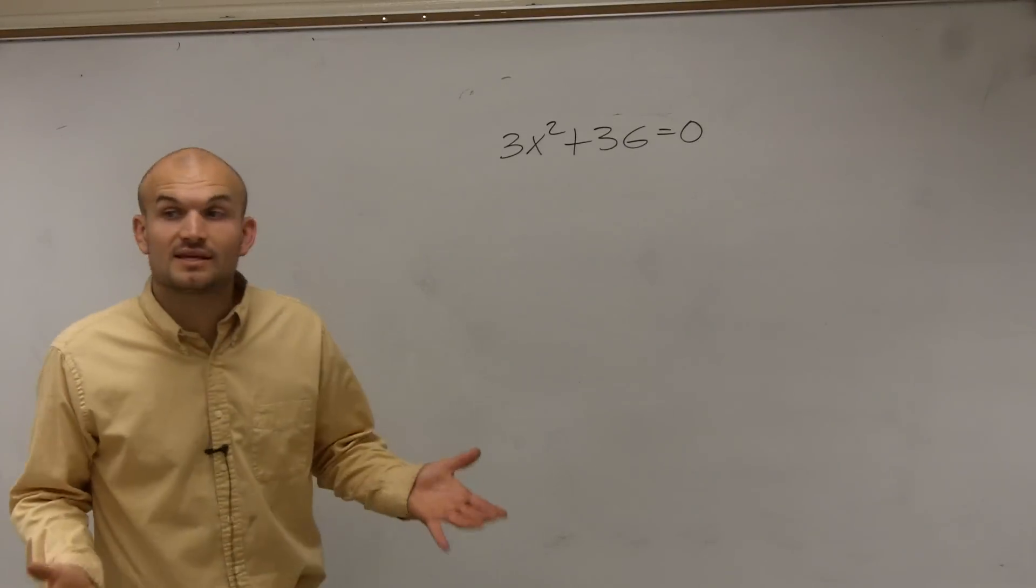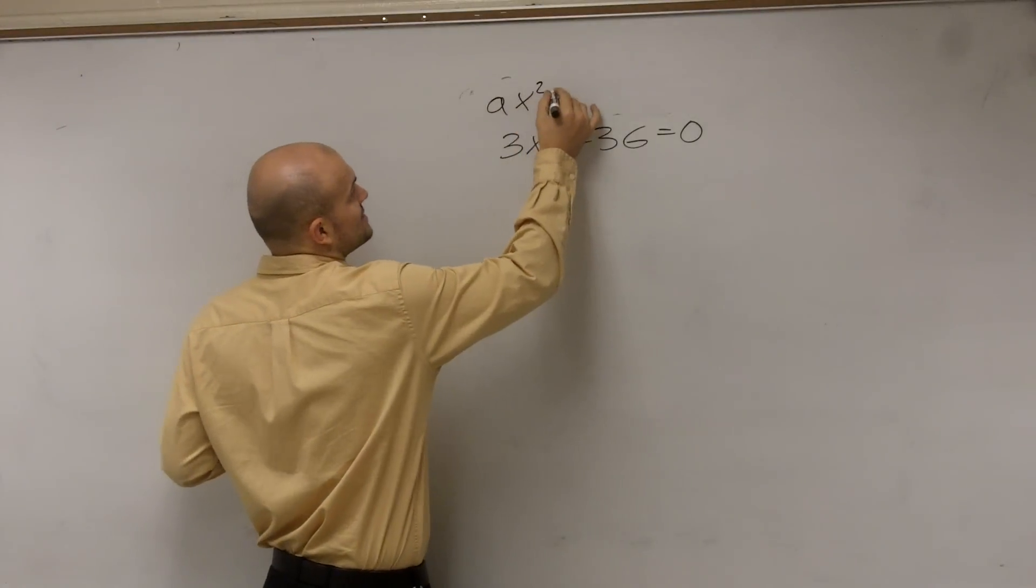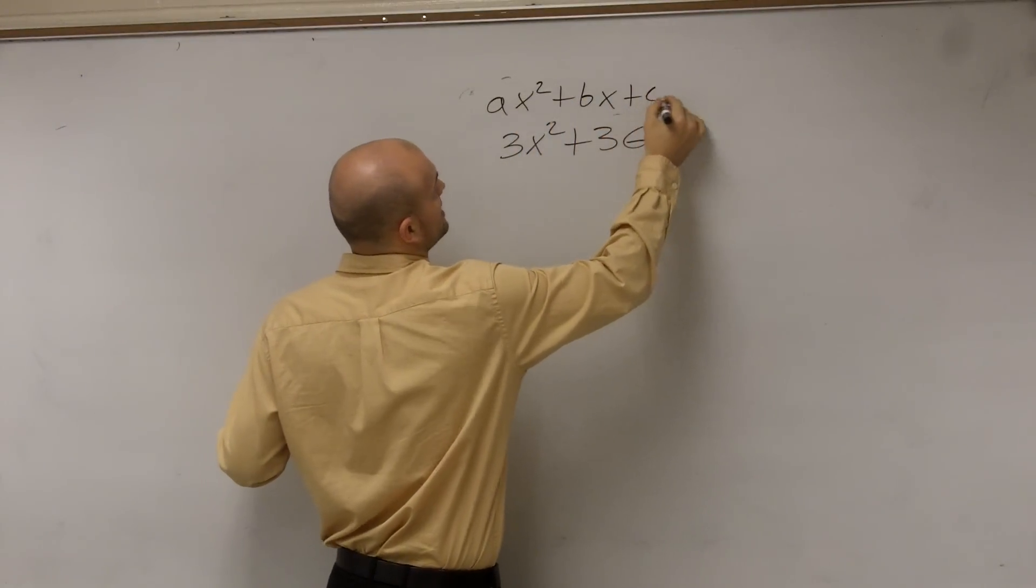So to do this problem, the main important thing is we need to make sure it's in quadratic form: ax squared plus bx plus c equals 0.